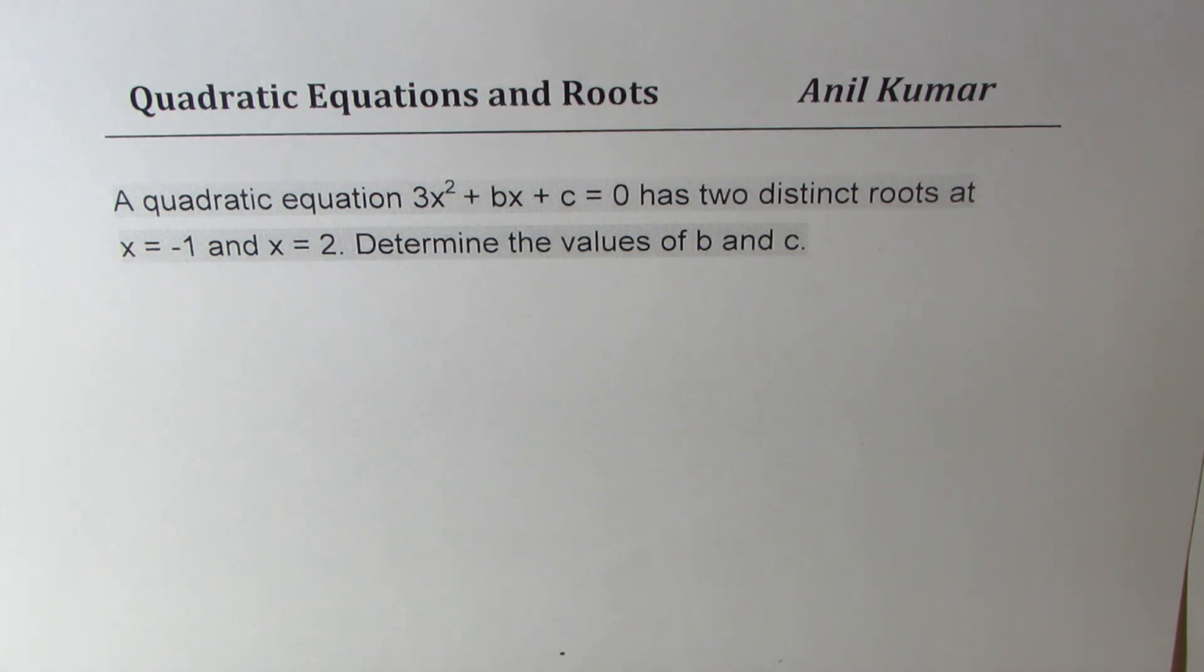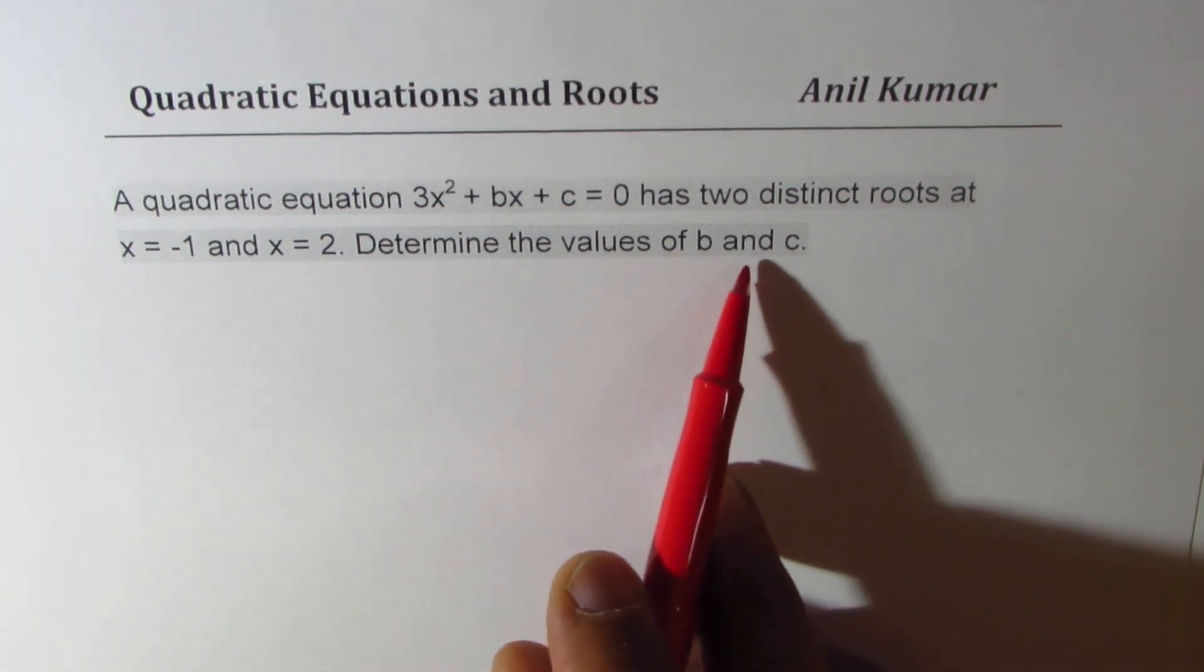a quadratic equation, 3x squared plus bx plus c equals 0, has two distinct roots at x equals minus 1 and x equals 2. Determine the value of b and c.